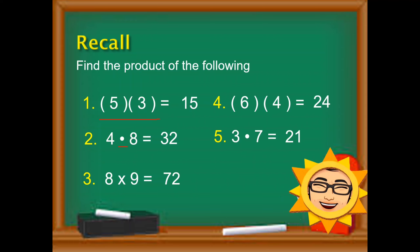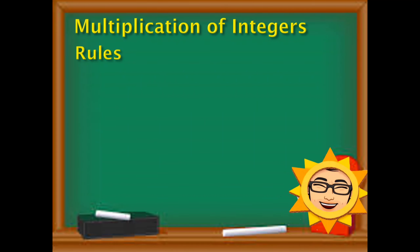So katulad nung nakikita niya sa 4 times 8, yung bullet ay nasa bandang gitna. And the last symbol that we use is the most familiar — ito na yung ginamit natin at ginagamit pa natin mula pa elementary. So let us move on with the multiplication rules. So when we multiply integers, two things yung tatatandaan natin: the like and unlike sign. Let's concentrate first with like sign. Pag like sign, the product is positive.